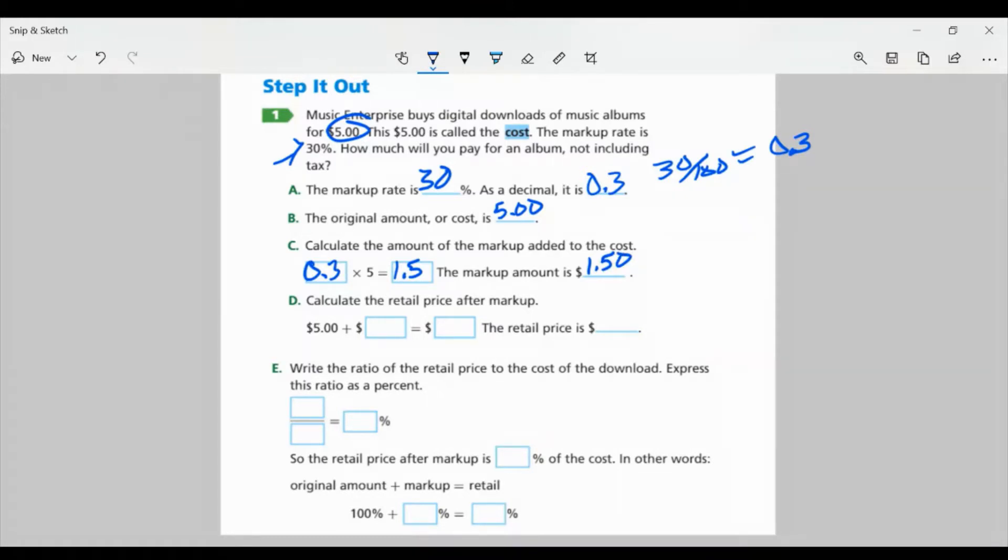Now for Part D, it says calculate the retail price after markup. So we're going to take our original price, which was $5, and I want to add 30%, which was $1.50. And when we combine those, we get $6.50. So the retail price is $6.50.